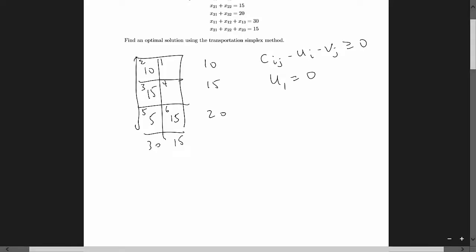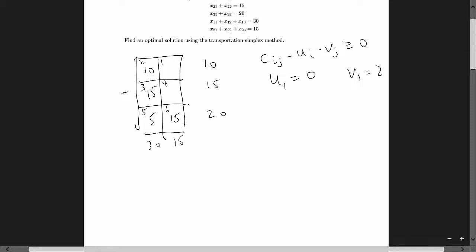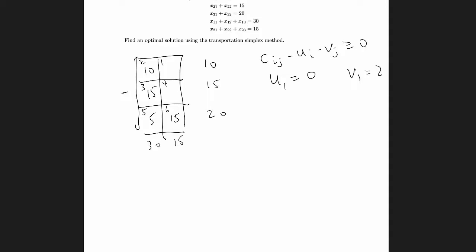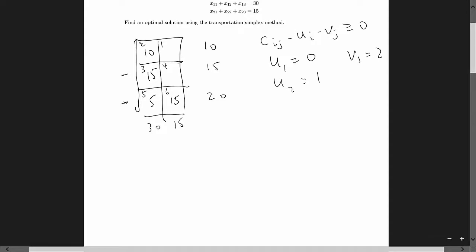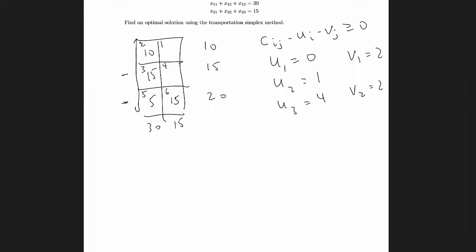With u1 equal to zero, looking at C11: C11 minus u1 minus v1 must equal zero. C11 is two and u1 is zero, so v1 equals two. With v1 equal to two, C21 minus u2 minus v1 must equal zero: three minus u2 minus two equals zero, so u2 equals one. Since v1 is two, moving to row three column one gives u3 equals four. From there, six minus u3 minus v2 equals zero, so v2 equals two.